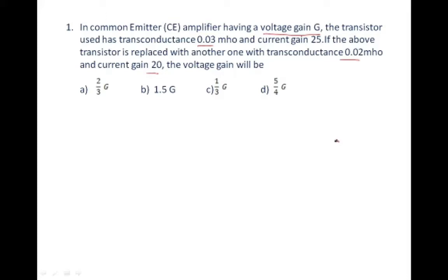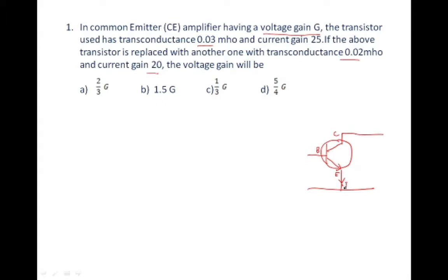This question is mainly about a common emitter transistor amplifier. Let's draw one using an NPN transistor. Here we have the collector region, the emitter region, and the base region. The emitter is common to both input and output. The currents are: ie (emitter current), ic (collector current), and ib (base current).